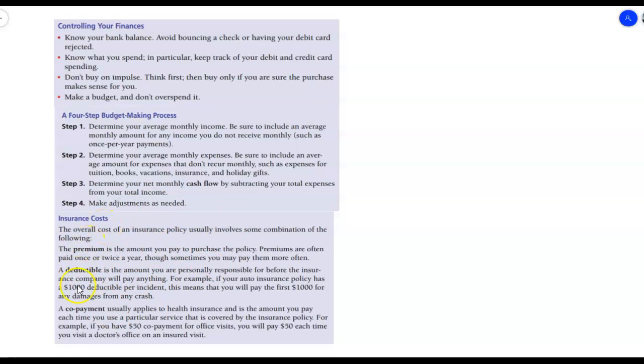And insurance costs. A lot of people have a little bit of trouble with the terminology, so let's go over that. The overall cost of an insurance policy usually involves some combination of the following. The premium is the amount you pay to purchase the policy. The premiums are often paid once or twice a year, but sometimes you may pay them more often. So that's what we pay in order to purchase our insurance.